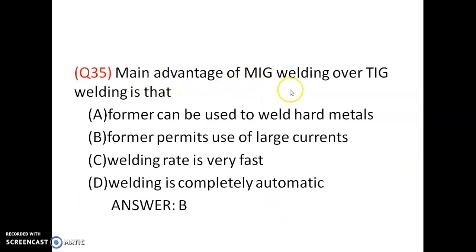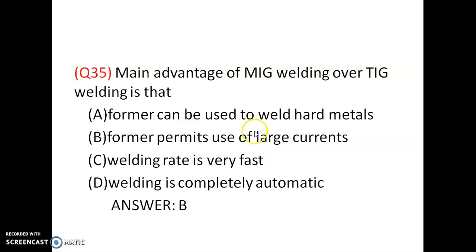The main advantage of MIG welding (metal inert gas welding) over TIG welding (tungsten inert gas welding) — options: former can be used to weld hard metals; former permits use of large currents; welding rate is very fast; welding is completely automatic. MIG welding permits use of large currents. Option B is correct.